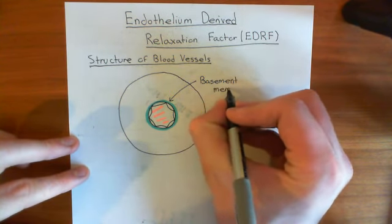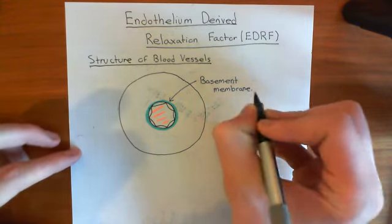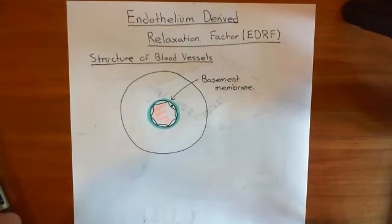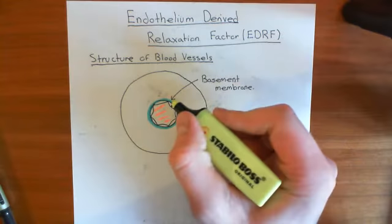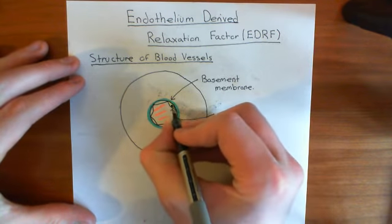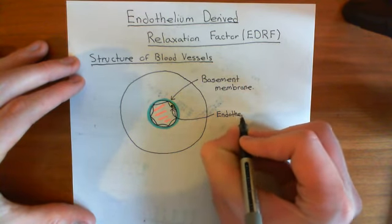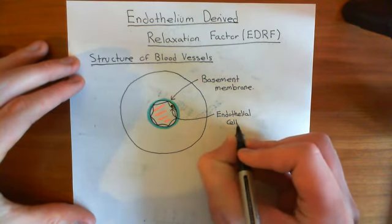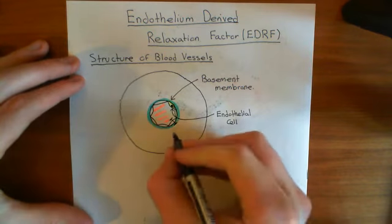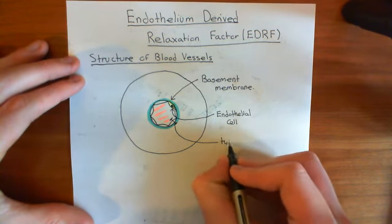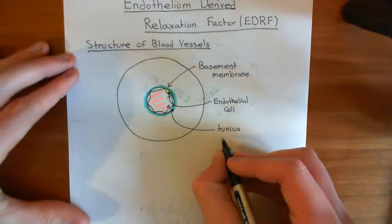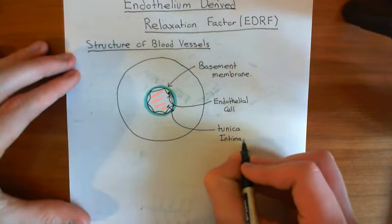The basement membrane is a collagen-based membrane on which the endothelial cells sit, and together with the endothelial cells this forms the tunica intima. Tunica comes from Greek or Latin meaning layer, and intima means close — so tunica intima means the layer that's close to the blood.